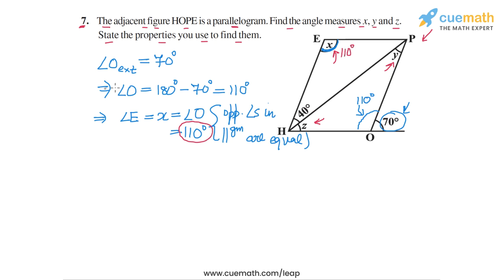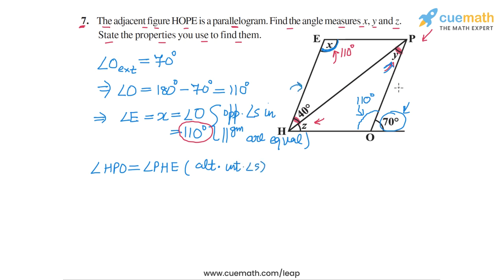Now, how can we find the measure of Y? Angle Y forms an alternate interior angle pair with angle PHE. So angle HPO equals angle PHE, because they are alternate interior angles for the parallel lines HE and OP, with transversal HP.